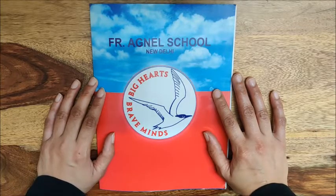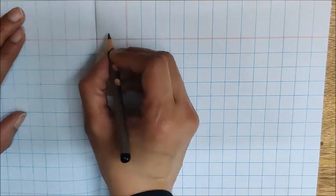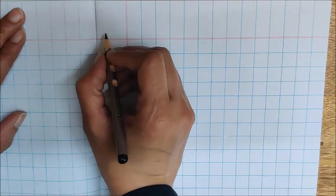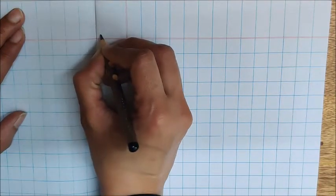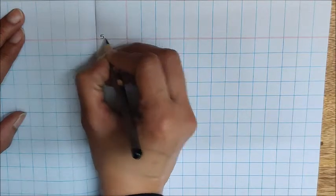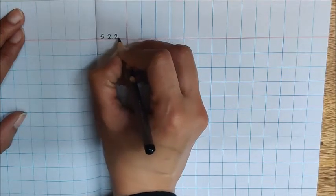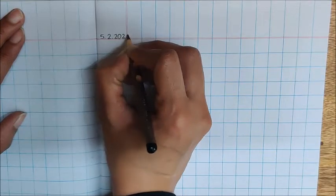So children, open a new page. Write the date here. Today is February 5. 5 dot, 2 dot, 20, 21.